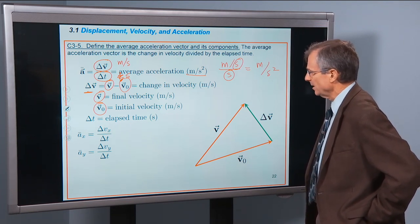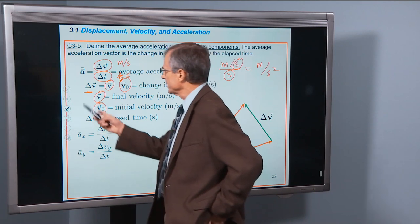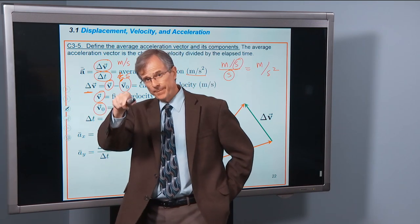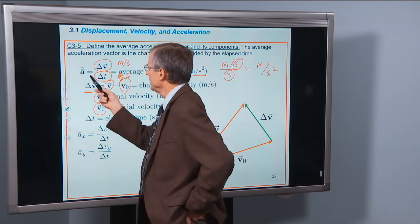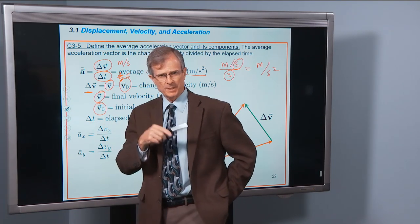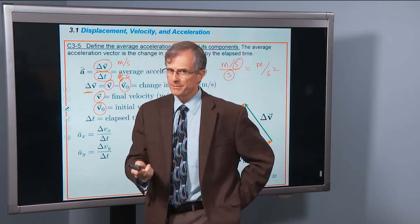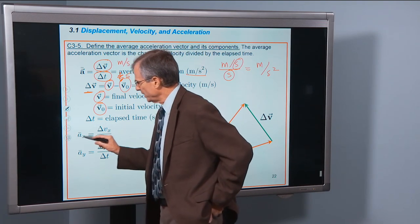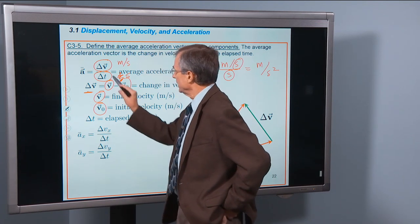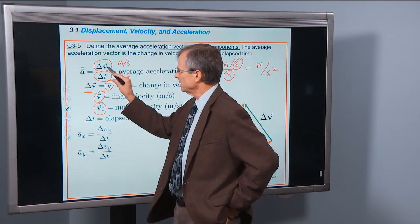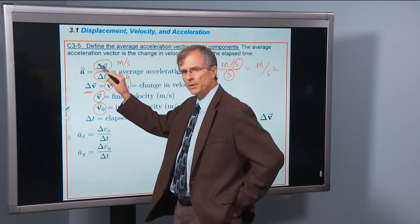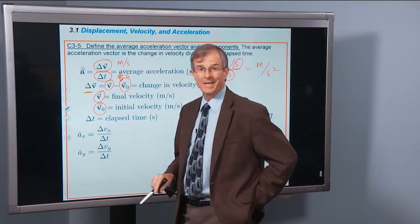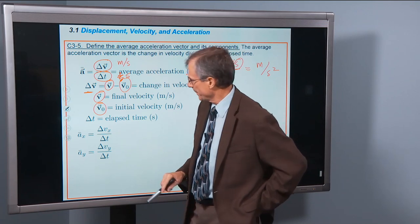The bar over the top of the acceleration means the average. A with the arrow over it means the acceleration vector, so it must have a direction. Its components are found by putting a subscript x and finding the component of the change in velocity — that's just the change in the x component of the velocity. Same thing with y.